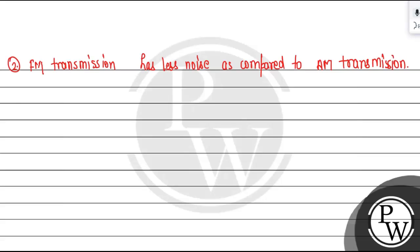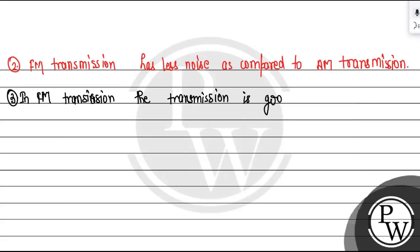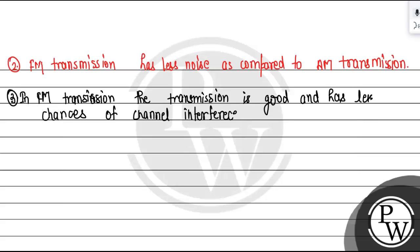The third advantage: Frequency Modulation transmission has less chances of channel interference as compared to Amplitude Modulation. This is because in FM we are using the change in the frequency rather than the amplitude.